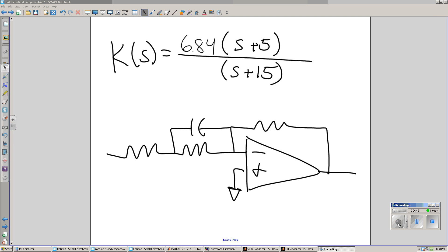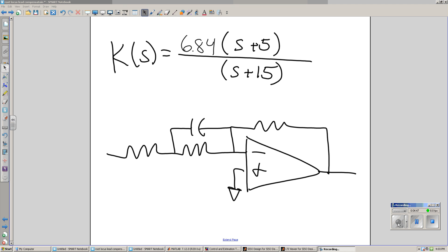The net result is I've now got my lead compensator. 6.84, cancel the pole at minus 5, replace it with the pole at minus 15.